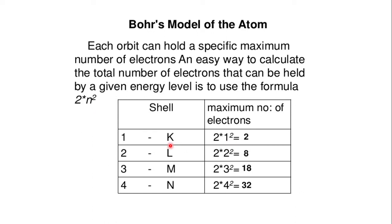Using the formula 2N²: for the K shell (N = 1), 2 × 1² = 2 electrons. For the L shell (N = 2), 2 × 2² = 2 × 4 = 8 electrons. For the M shell (N = 3), 2 × 3² = 2 × 9 = 18 electrons. And for the N shell (N = 4), 2 × 4² = 2 × 16 = 32 electrons.